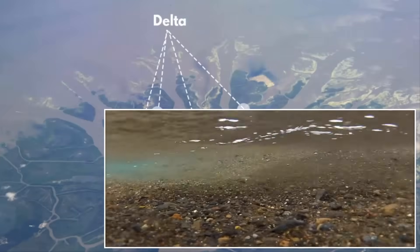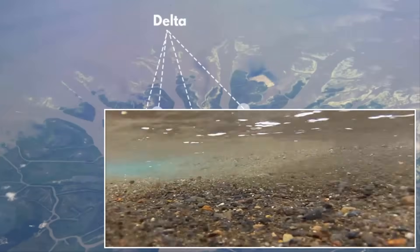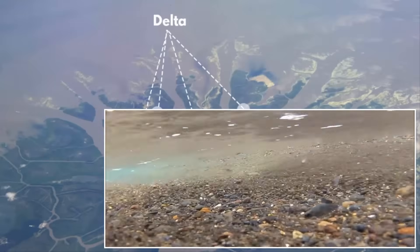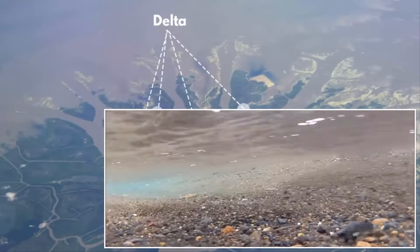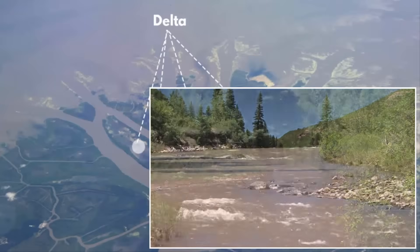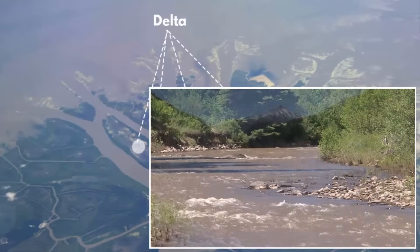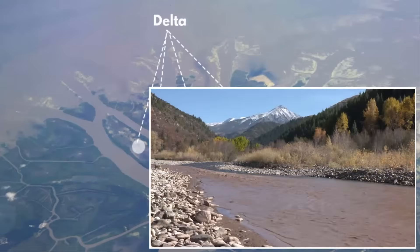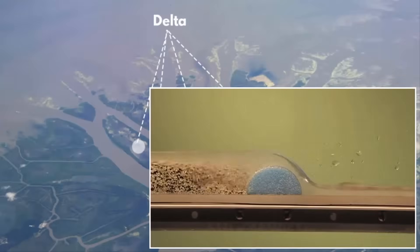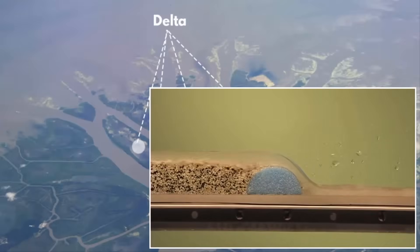We know that when rivers flow, they carry a lot of sediments and rocks. The greater the flow, the more sediment it will carry. As soon as the flow of the river slows down, sediments in rivers get deposited. You will notice that large heavier particles like pebbles, rocks and sand are deposited first. After that, lighter material like silt and clay gets deposited.